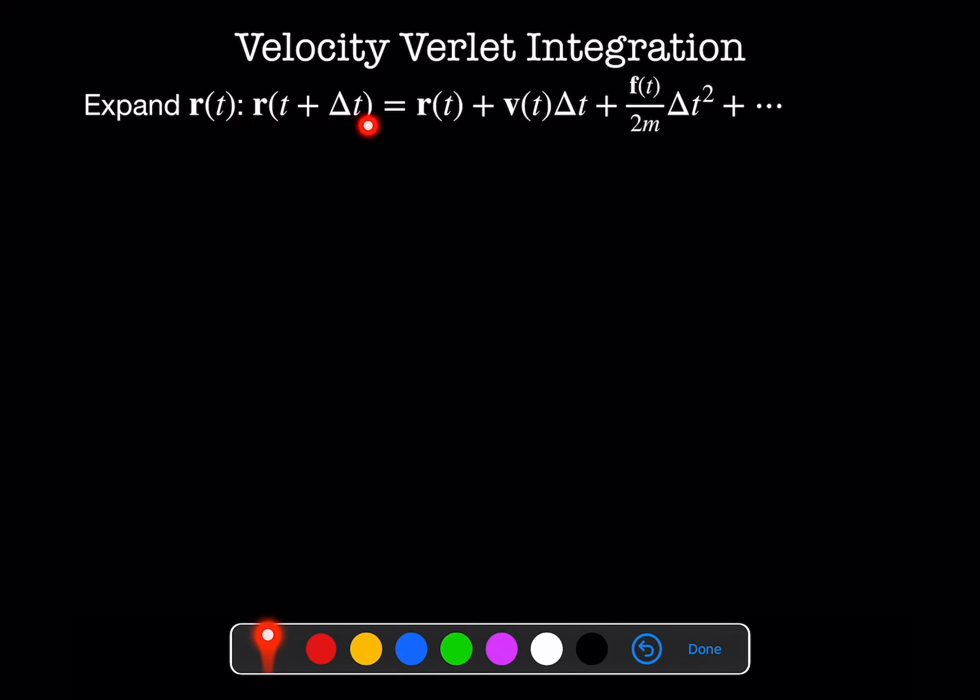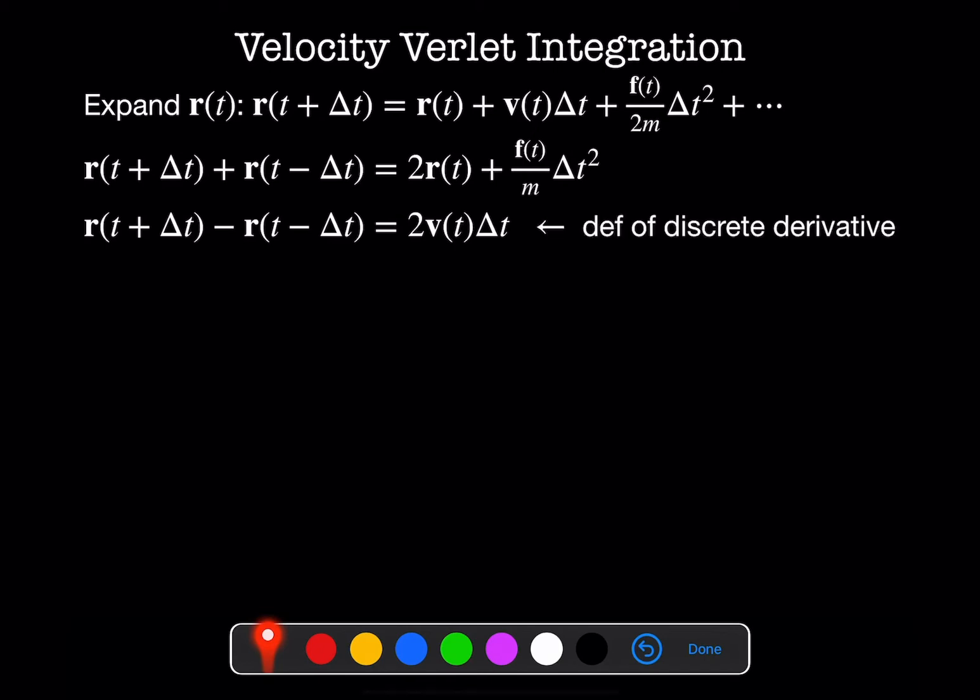So what we want to do is nicely calculating the force velocity update and position update in a single step. If we take this definition here, let's look at r of t plus delta t and r of t minus delta t. And that'll let us isolate some more terms. So when I add those two together, I end up with a relationship between my position at time t, a force at time t, and how that's going to change with a time step. If I subtract the two, I end up with 2v of t times delta t. So if I rearrange this a little bit, I can end up with the definition of a discrete derivative. So r of t plus delta t minus r of t minus delta t divided by 2 delta t is a discrete derivative.